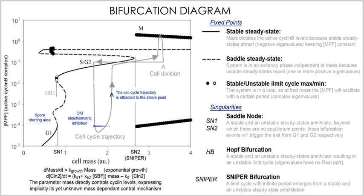Molecular set theory (MST) is a mathematical formulation of the wide-sense chemical kinetics of biomolecular reactions in terms of sets of molecules and their chemical transformations represented by set-theoretical mappings between molecular sets. It was introduced by Anthony Bartholomay, and its applications were developed in mathematical biology and especially in mathematical medicine. In a more general sense, MST is the theory of molecular categories defined as categories of molecular sets and their chemical transformations. The theory has also contributed to biostatistics and the formulation of clinical biochemistry problems in mathematical formulations of pathological, biochemical changes of interest to physiology, clinical biochemistry and medicine.